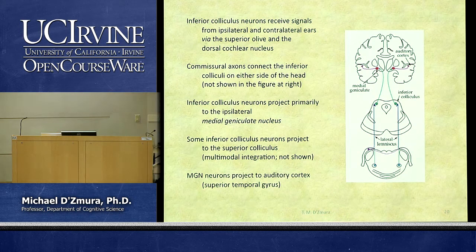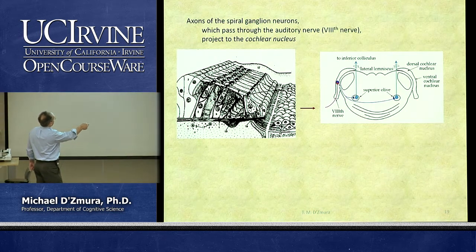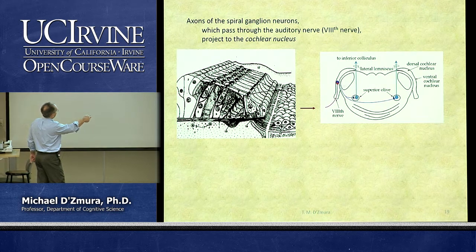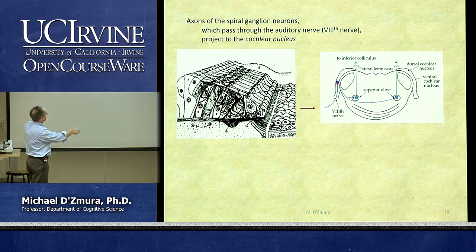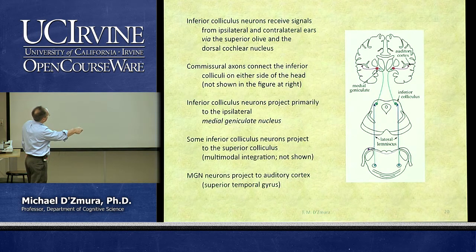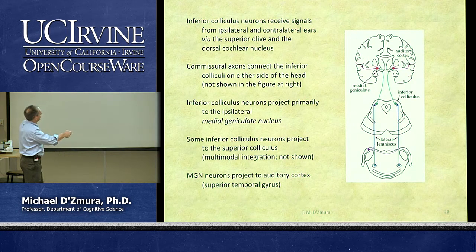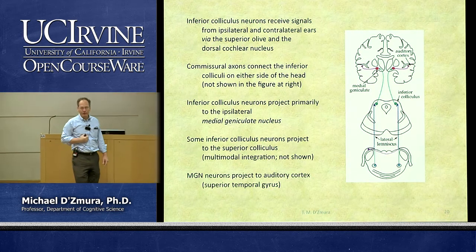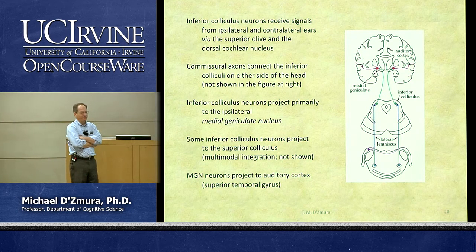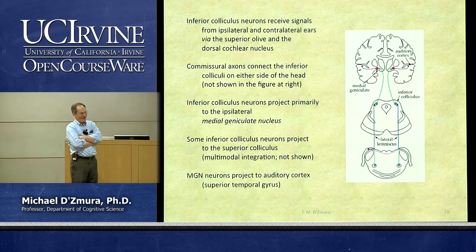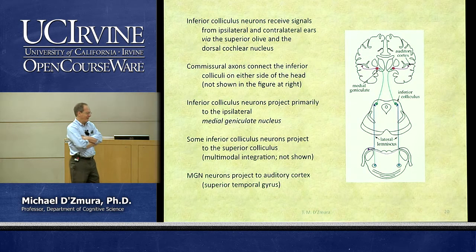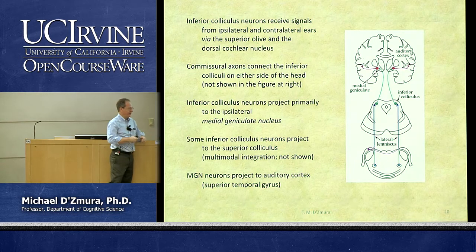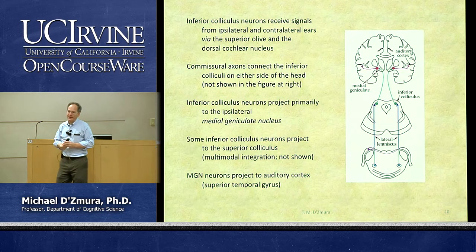By the time we're at the inferior colliculus, we're talking about neurons that receive input from both ears. What is that good for? Why do we want input from both ears? It helps us figure out where a sound source is located. If we want to know where a sound source is, one of the best ways is to compare the stimuli we receive in our two ears.